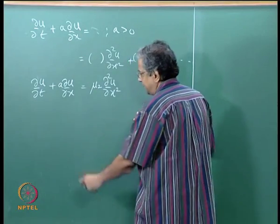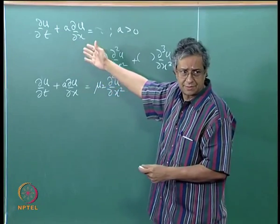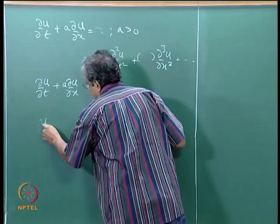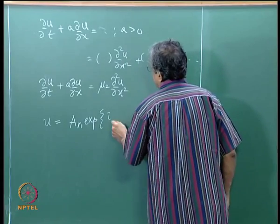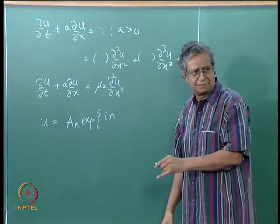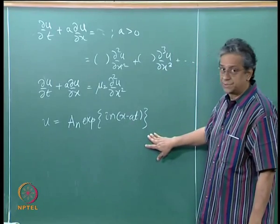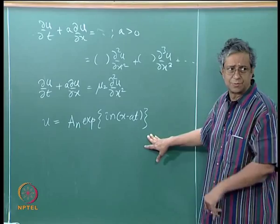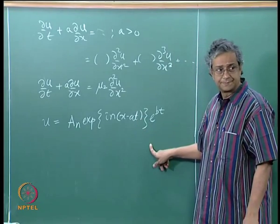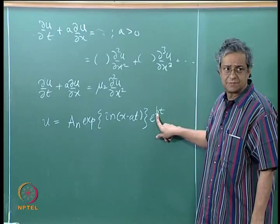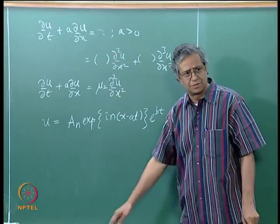For this equation, we said that a solution could be written in terms of Fourier series. I will write one term - it is still a solution. So u could be written as e^(i·n·(x - at)). This was for the original equation. We take the semi-inverse route, guessing that the solution to this equation is in this form, which gives us one disposable constant b that we need to determine.